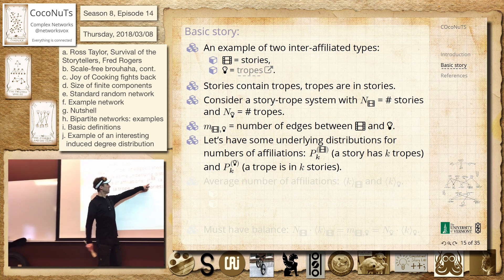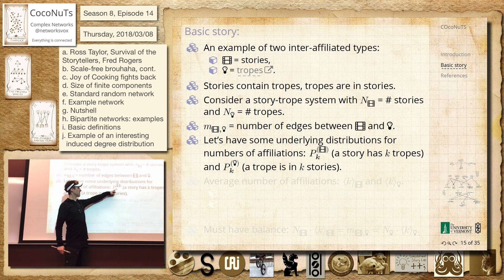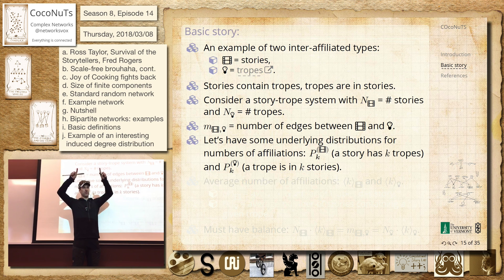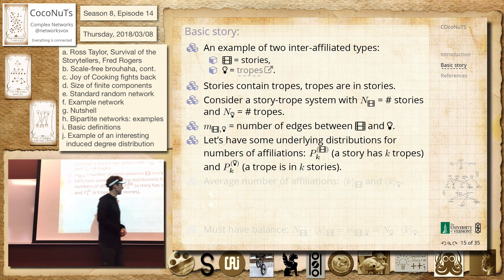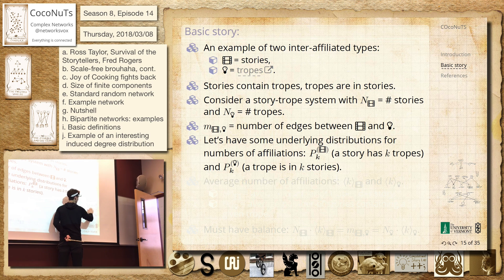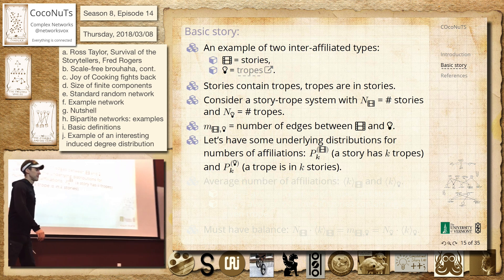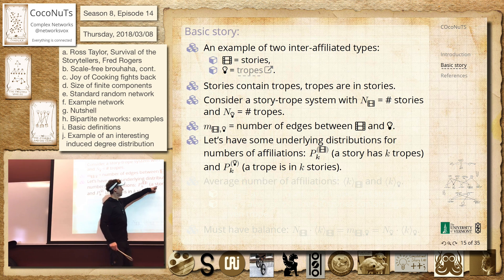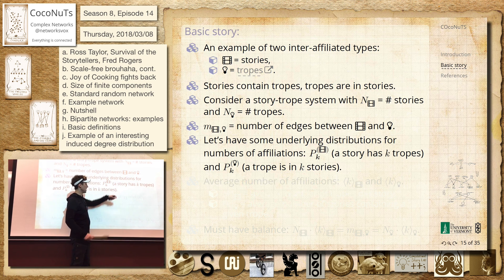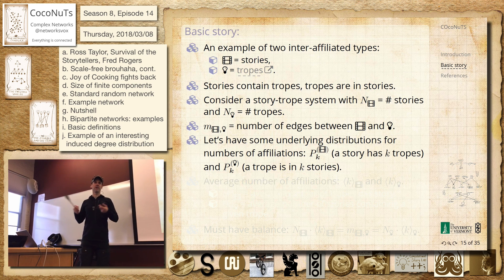We're going to have some distributions. This is going to be the probability that a story has k tropes. What we want to figure out is the probability that a story is connected to k other stories through the tropes. So this one has two friends, this one has two friends — those are the probabilities. We want to go from here to here: given distributions of stories over tropes and tropes over stories, if we make the story-story or trope-trope network, what do they look like?